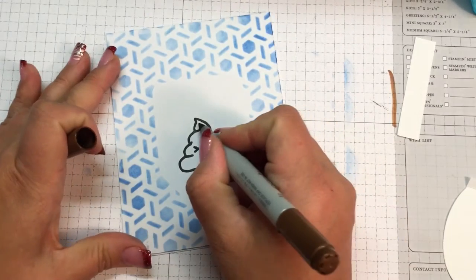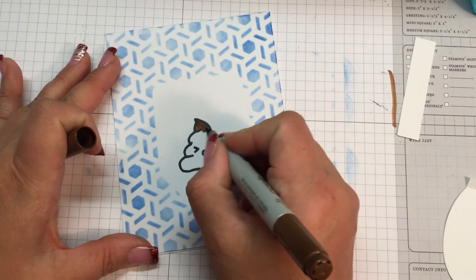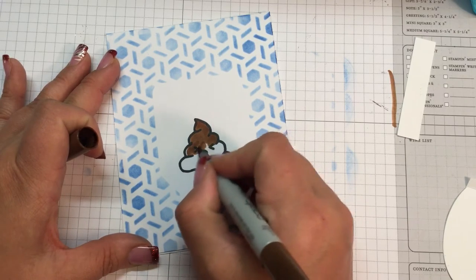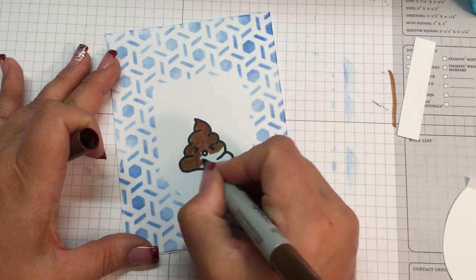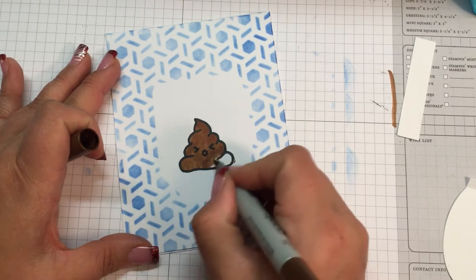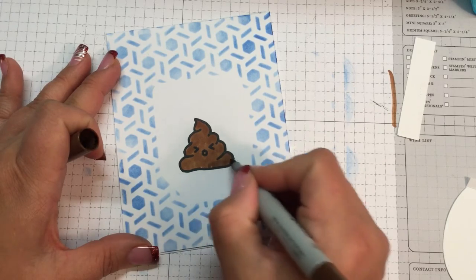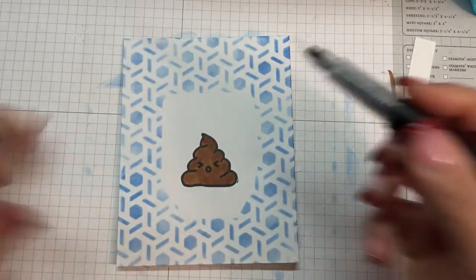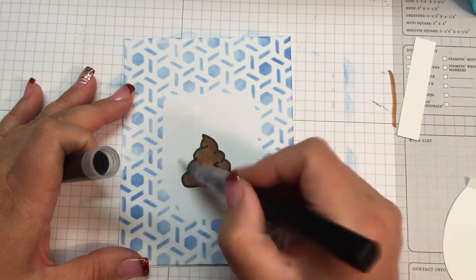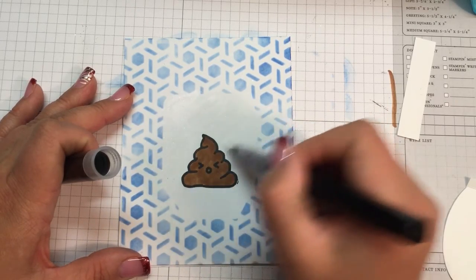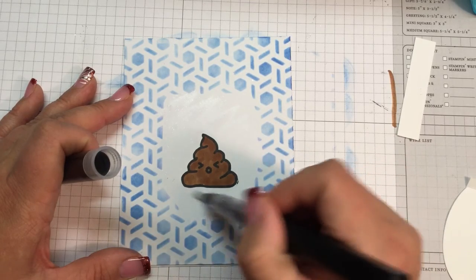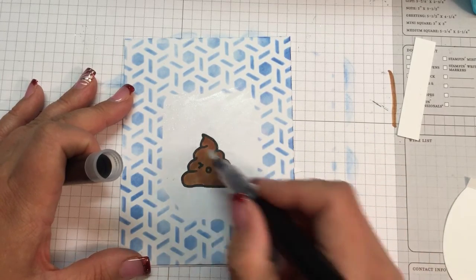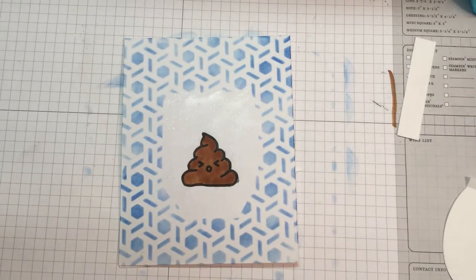And then once that dries we're going to color it in with a Copic marker and I just use like a circular motion so that it has a little bit of dimension to it. And you could go in and do a couple colors, I'm just going to do one color to make it real quick. All right, the other thing that I do is I take the Spectrum Noir glitter clear glitter sparkle pen and I clean or fill in all that white area. This way you know it looks like there's water in the toilet bowl, and I know it's hard to see on camera but it is sparkly. And I don't do it on the poo, just on the outside of the poo.